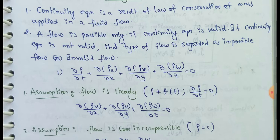This flow is possible only if the continuity equation is valid. If the continuity equation is valid, that flow is possible. If the continuity equation is not valid, that flow is not valid — it is impossible or invalid flow.